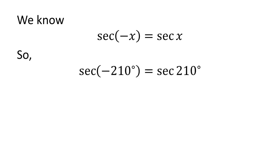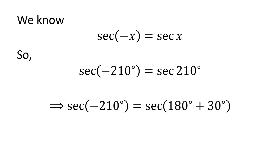Let us apply the above identity for secant of minus 210 degrees. Here x is 210 degrees. So secant of minus 210 degrees is equal to secant of 210 degrees. As 210 degrees is equal to 180 degrees plus 30 degrees, secant of minus 210 degrees is equal to secant of 180 degrees plus 30 degrees.